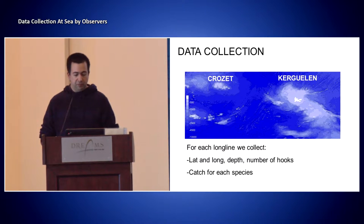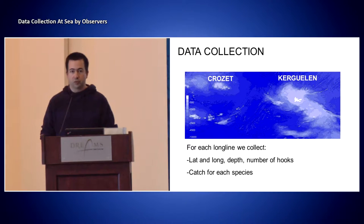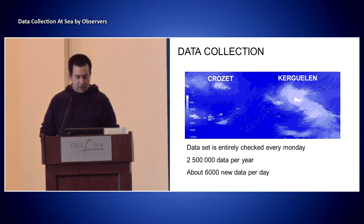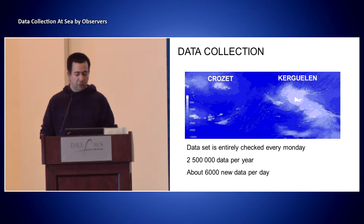For all these fishing events, we obviously collect lat, long, depth, the number of hooks, and all the catches for each species. At the end of the fishing season, we end up with a big table with about 2.5 million data points, which means the data flow is 6,000 new data per day.